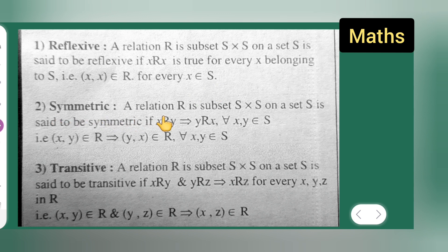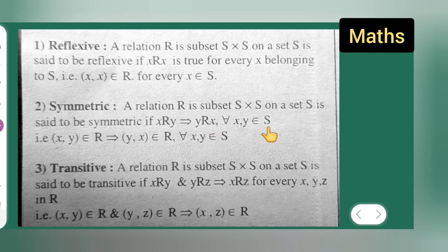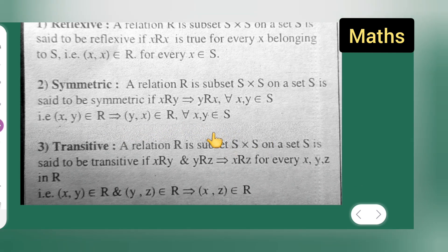Symmetric: a relation R ⊆ S×S on a set S is said to be symmetric if X is related to Y implies Y is related to X, for all X, Y belonging to S. That is, (x,y) ∈ R implies (y,x) ∈ R for all x, y ∈ S.